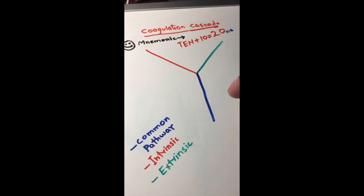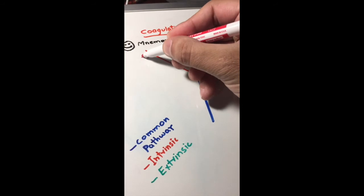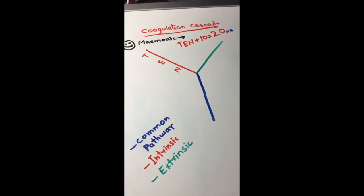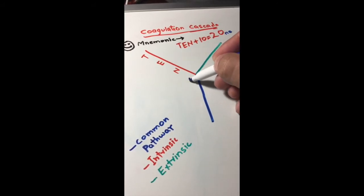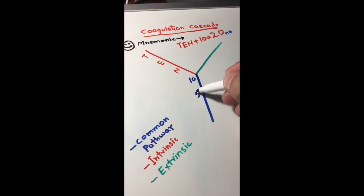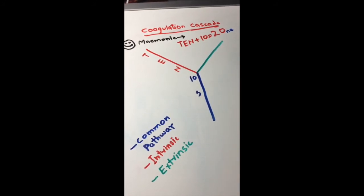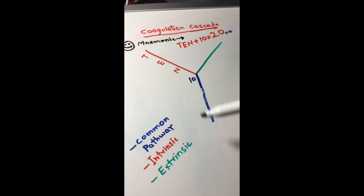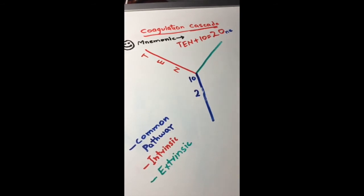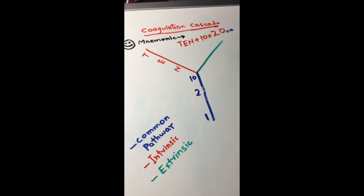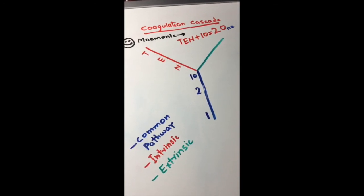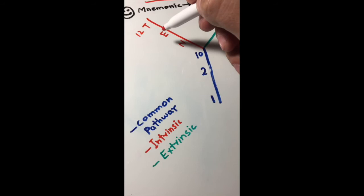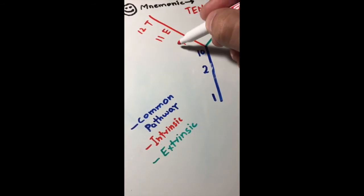Now I'm gonna put this mnemonic on this diagram so you can really understand it. I'm gonna put here a T and E, and then this is our common pathway: 10, 2, and 1. That's our mnemonic. This T stands for 12, E for 11, and for 9.